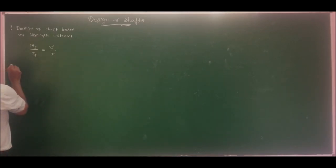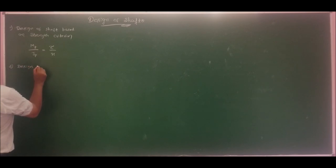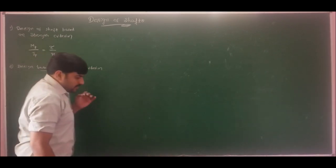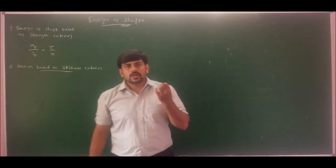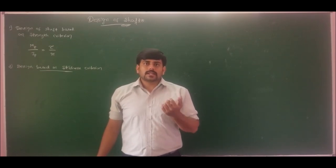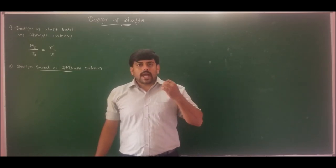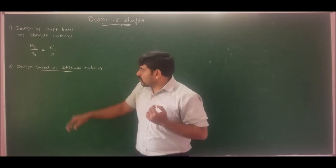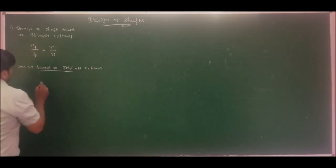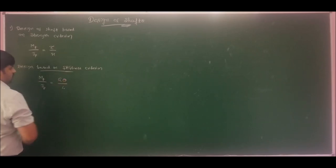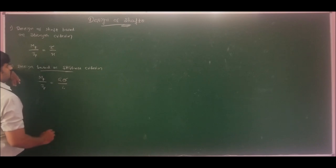For design based on stiffness criterion, stiffness is defined as force required to produce unit deflection. Similarly, torsional stiffness is the torque required to produce unit angular twist. According to this criterion, the angular deformation induced in the shaft should not exceed the permissible angular twist. The governing equation is Mt / Jp = G·θ / L, which is based on angular twist.